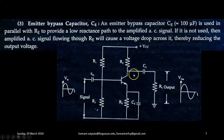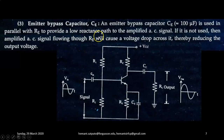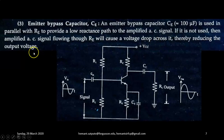Next is the emitter bypass capacitor CE. An emitter bypass capacitor CE, with a typical value of approximately 100 microfarad, is used in parallel with RE to provide a low reactance path to the amplified AC signal. If it is not used, then the amplified AC signal flowing through RE will cause a voltage drop across it, thereby reducing the output voltage and thereby reducing the gain of the transistor.